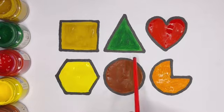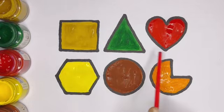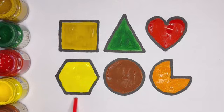Golden color square. Dark green color triangle. Red color heart. Yellow color hexagon. Brown color circle. Orange color pie.